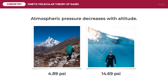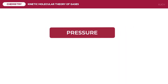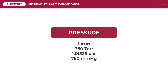Air pressure on Mount Everest is 4.89 pounds per square inch on average. At sea level, air pressure is at 14.69 pounds per square inch, which is way higher than the average on Mount Everest. Pressure is expressed in many units such as atmosphere, torr, bar, and millimeters of mercury. The standard pressure is at 1 atmosphere, and the following values are the conversion factors of pressure.